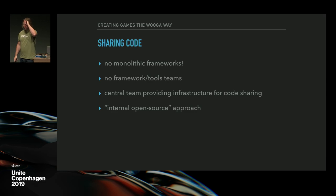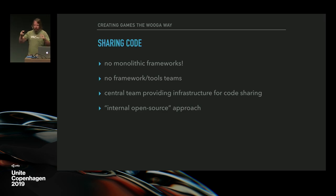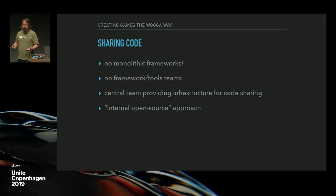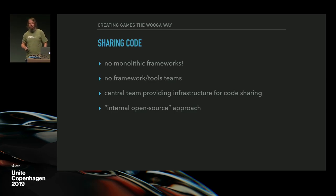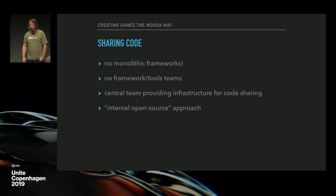What we do instead: we have a central team, but it only provides infrastructure for code sharing — a build server to publish packages and a package manager to integrate them, plus tooling to discover packages and see overall dependencies. The idea is that every tool and framework at Wooga is developed as open source internally, meaning every engineer takes part in developing them. If you don't like something, you can change it — you still go through pull request review, but you have the chance to change it. It's everyone's responsibility, which increases buy-in and quality.